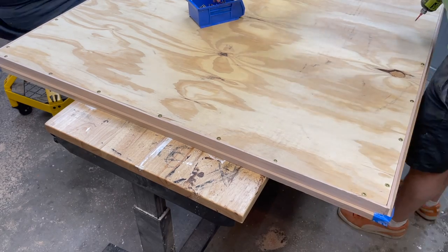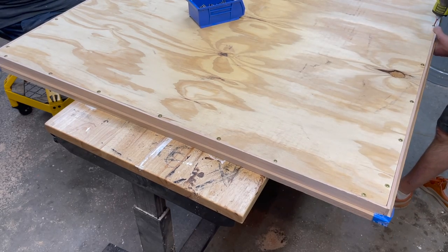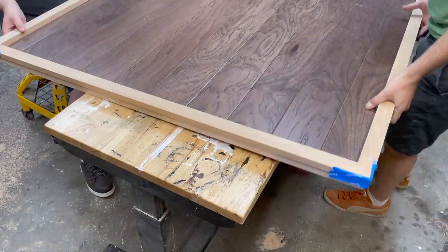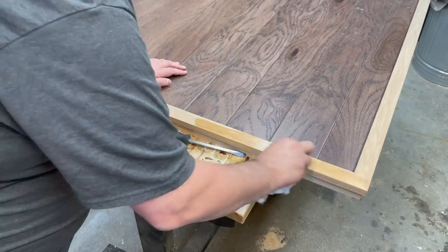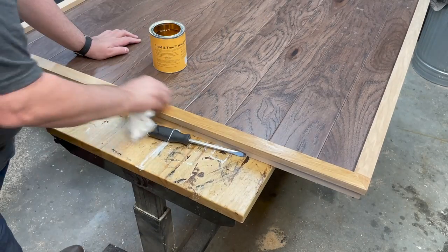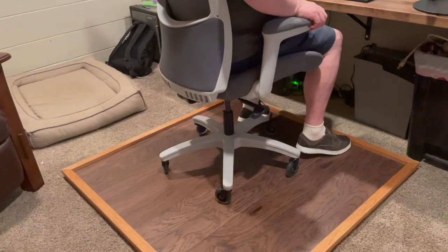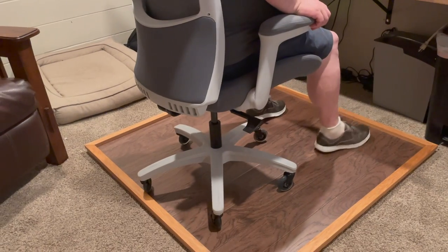We could have countersunk these, but I'm not terribly worried about it ruining the carpet because it's not really moving that much. So flip it back over, put some Danish oil on as a finish, which I just really like on hickory. You could obviously use a polyurethane or something like that, and this is the finished product.